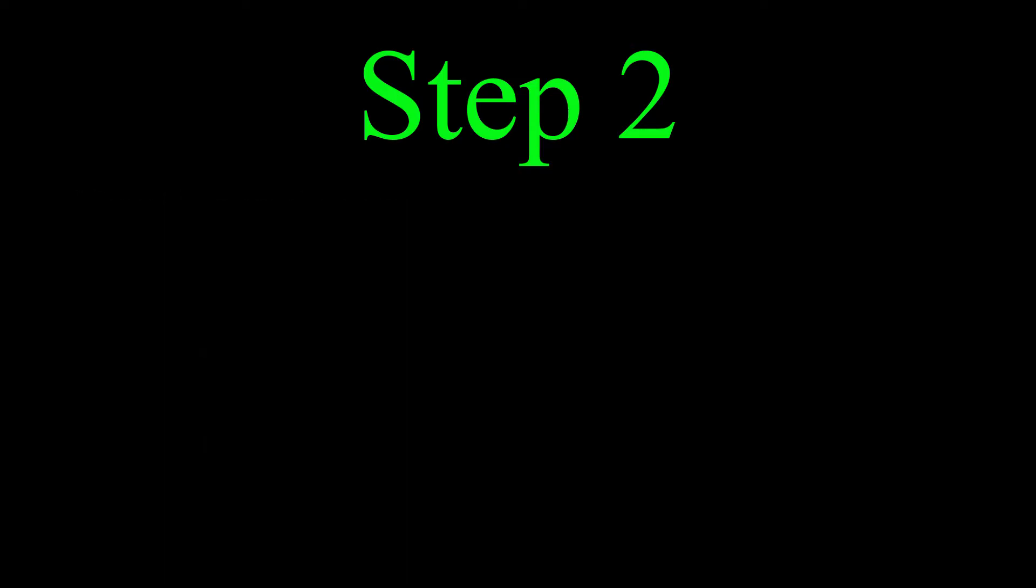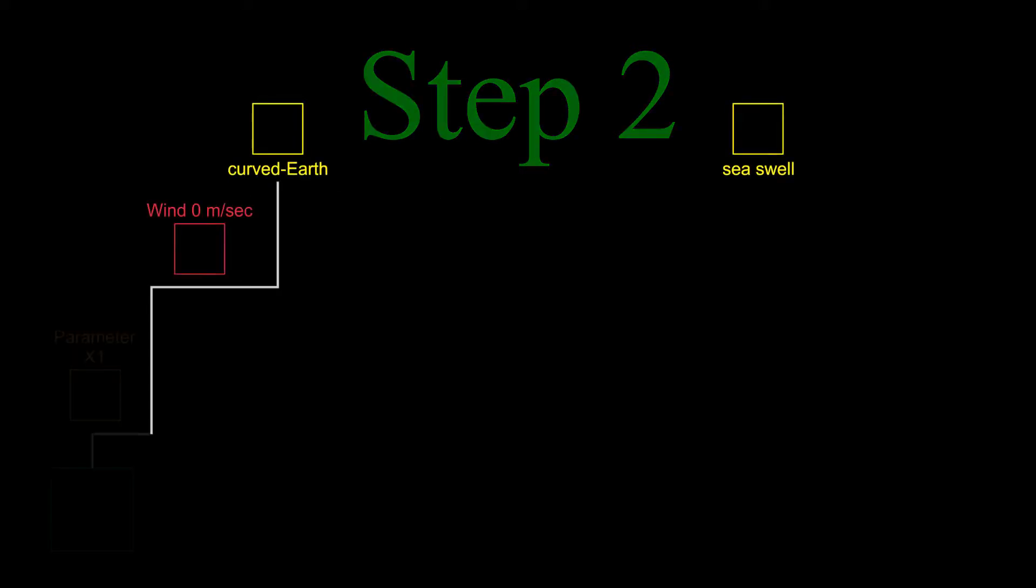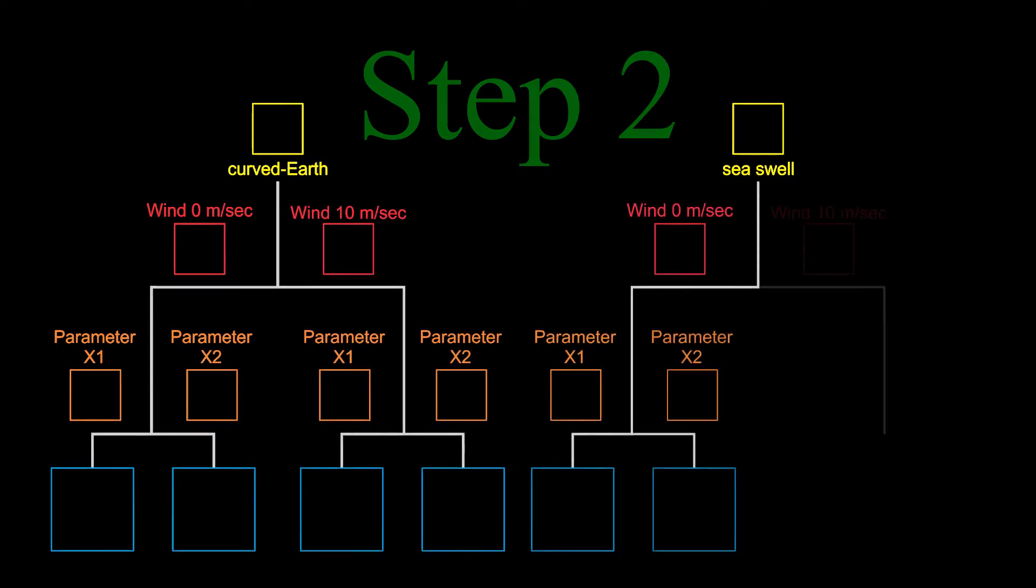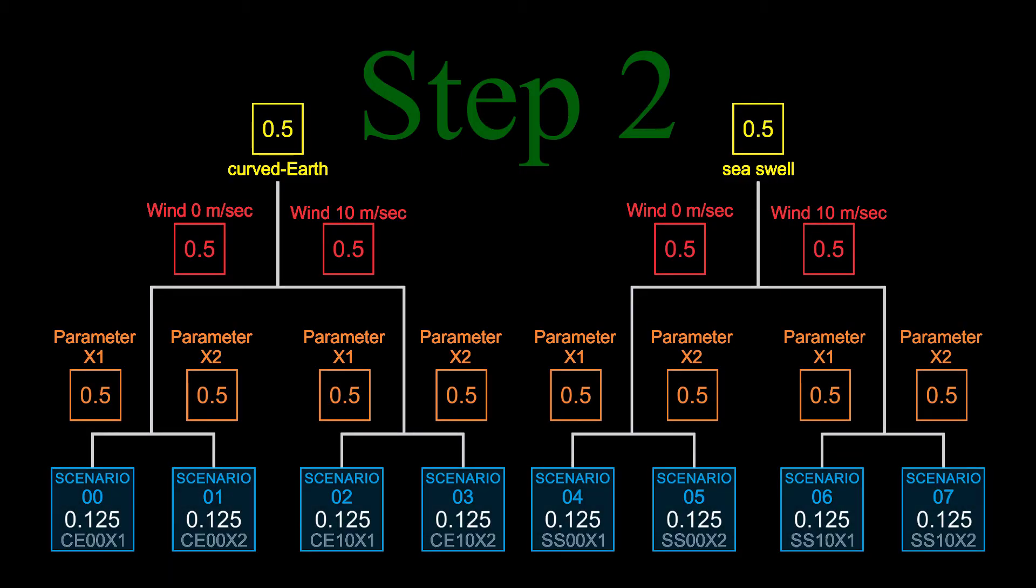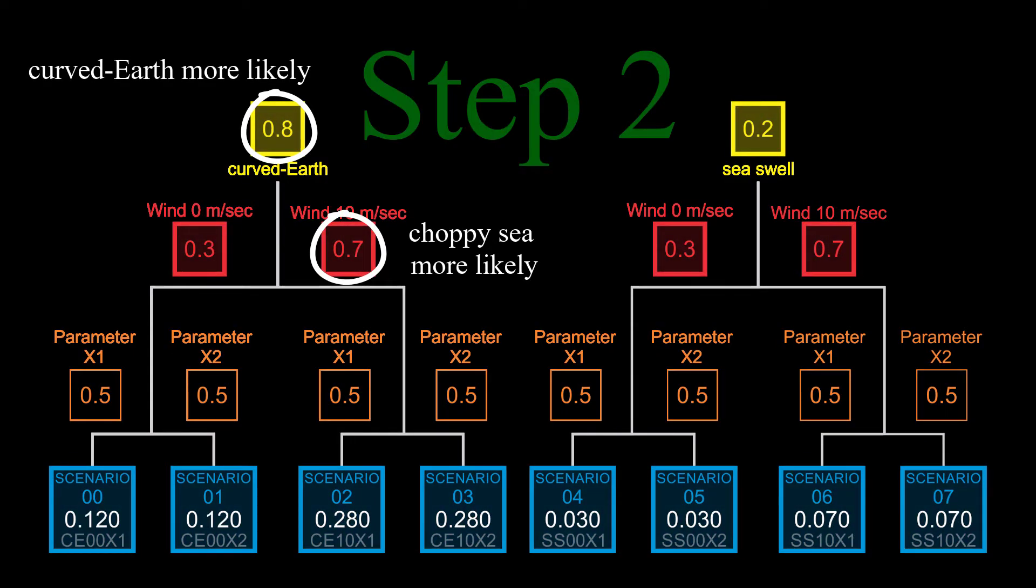Finally, and this is really important, we have to assign a probability of occurrence for each of the eight populations. This is the likelihood that the conditions of each population will be observed in the real world. Now, they might all be equally likely, or if the ship is operating in littoral waters, maybe sea swells are unlikely. Or maybe one wind speed is more likely than another at a particular time of year or location.